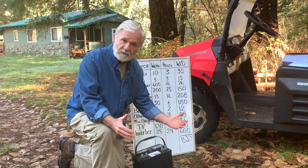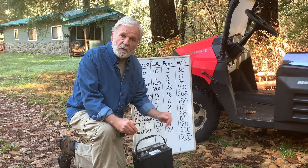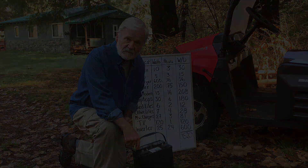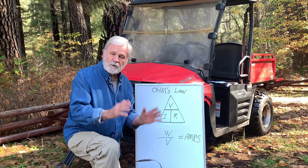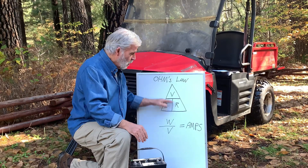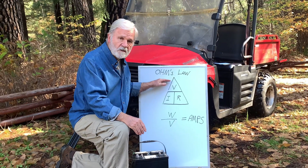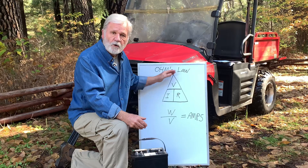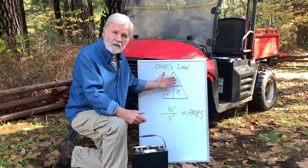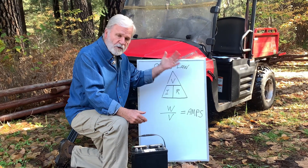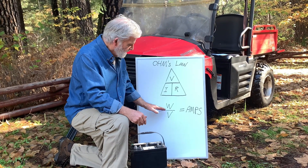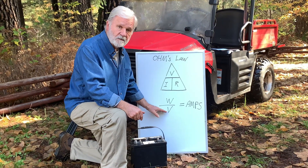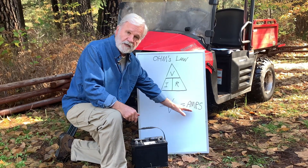Our first step is to convert the watts to amps so we're talking the same language when we figure out what size battery we need. We do this using something called Ohm's Law — a complicated-looking equation. If you want to know more about it, look it up on the web. But we're going to use it this way: if you divide watts by volts, you get amps.